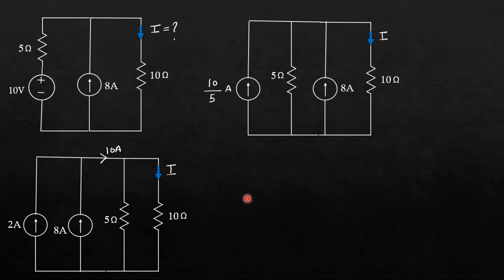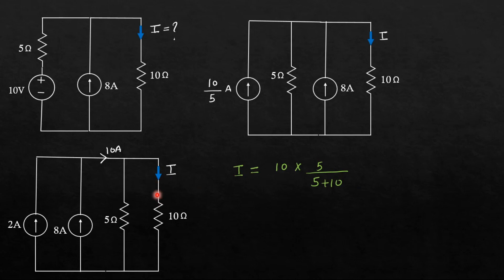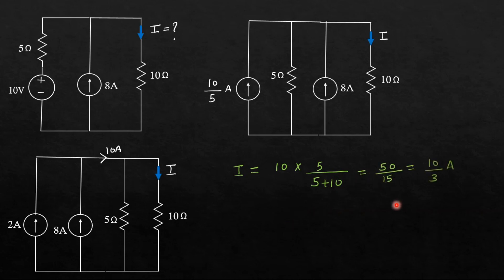We need the current in this branch, so I can make use of the current division rule. That is: total current multiplied by — at the numerator, I will take the resistance of the opposite branch, that is 5 Ohm. At the denominator, I will add both resistances. In this way I get the result as 50 by 15, that is 10 by 3 Ampere. This is how we make use of source transformation technique.